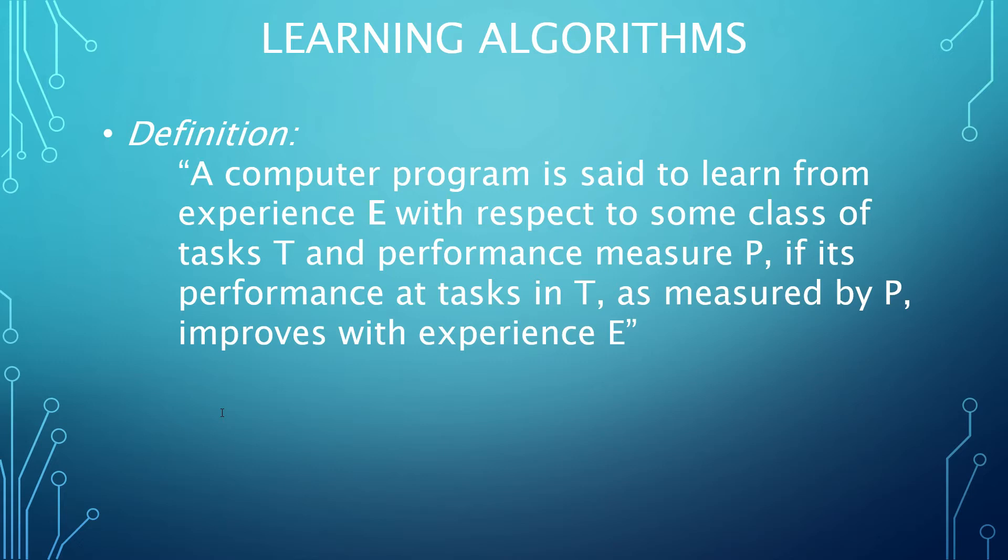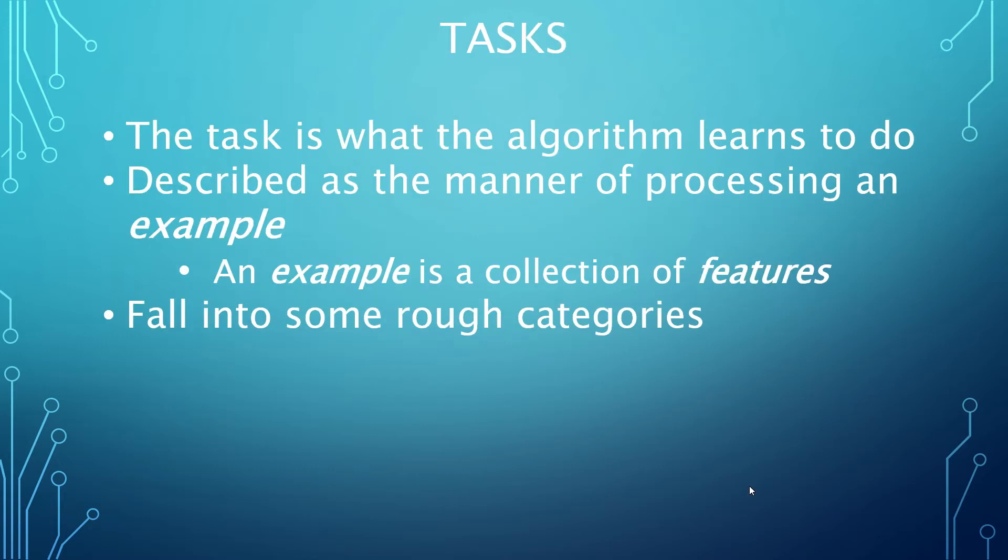What we'll look into is what each of these elements—experience E, task T, and performance measure P—can look like. It's key to note that the process of learning itself is not the task. The task of machine learning is generally not to learn better, but to apply some mode of learning to what is actually the task: how to walk, for example, given some motorized limbs.